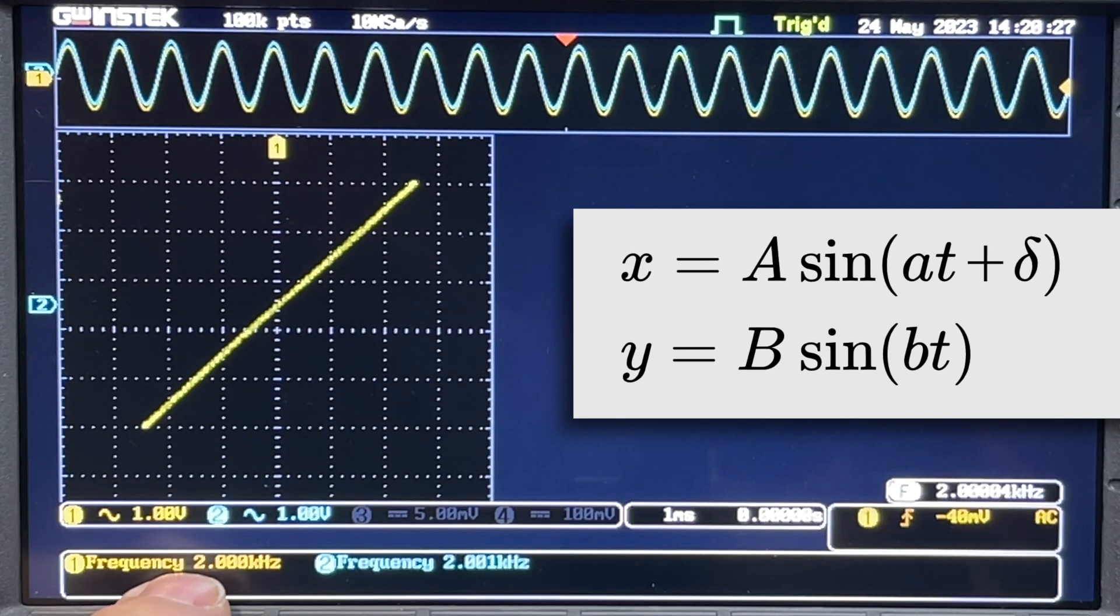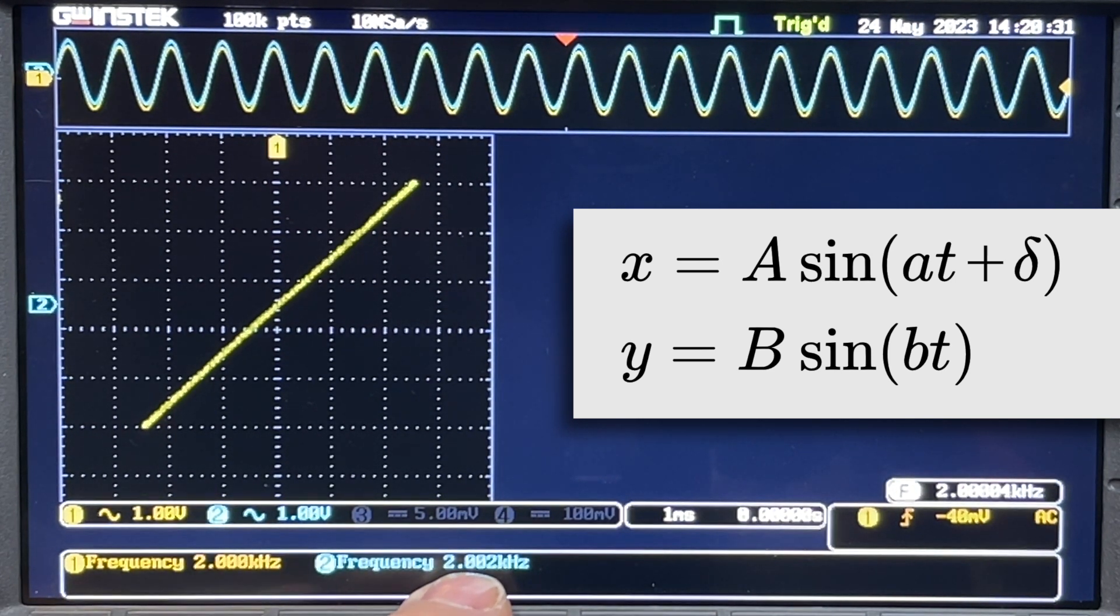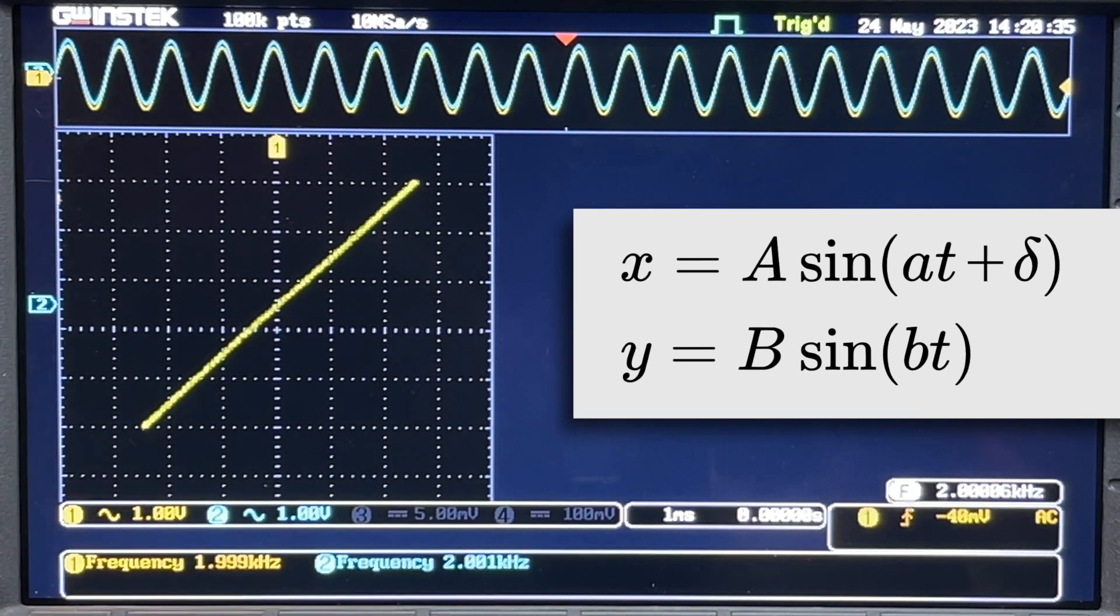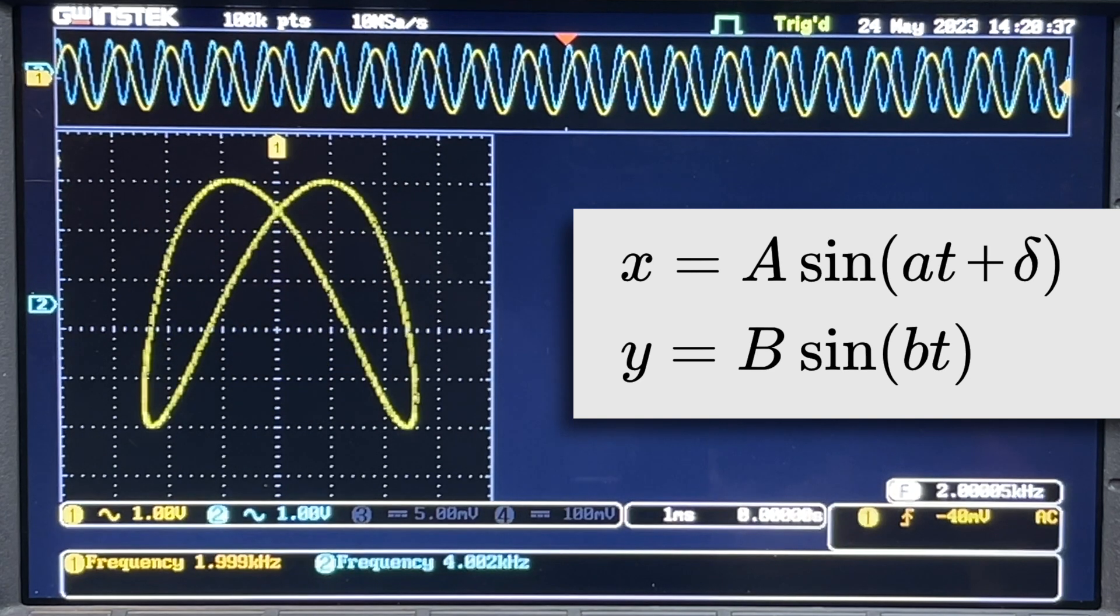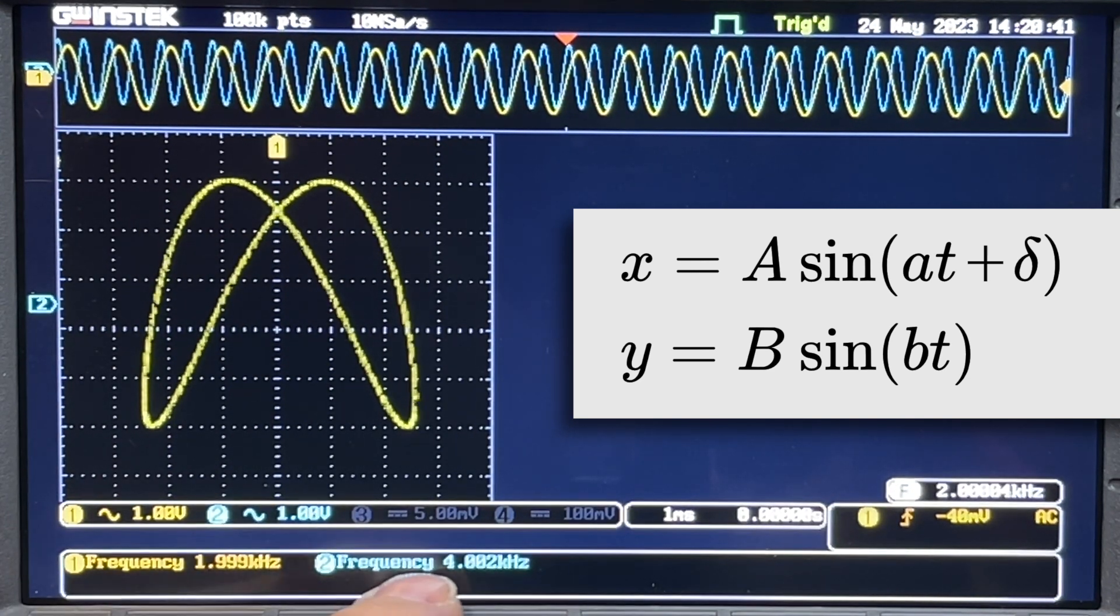These two waves of 2 kHz determine the x and y coordinates of each point of the figure through the formulas. And because both frequencies are equal here, we're looking at the side of a circle. This projects a stable figure because the frequency ratios are exact.